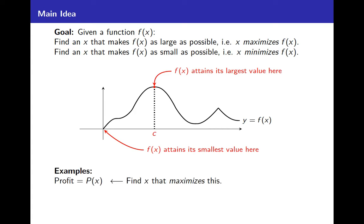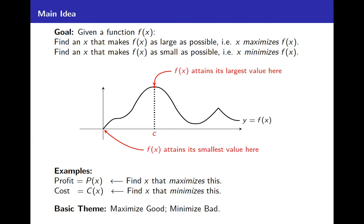For example, if you had a function p of x that gave profit, you might want to find an x that maximizes that. If c of x is cost, you want to find an x that minimizes that. So the basic theme in the applications of global extrema is to maximize the good and minimize the bad, and that's important in applications.